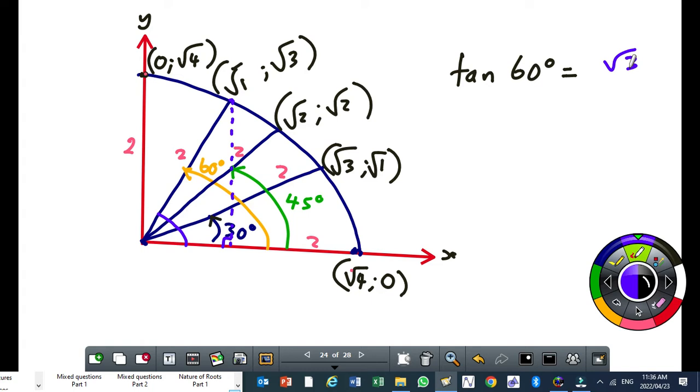So the y value, that's your opposite side. The x value, that's your adjacent side. Throughout here, y is the opposite, x is the adjacent. The hypotenuse will be what? Two units throughout. So you can memorize this. If you sit down and memorize this, it's not that complicated.